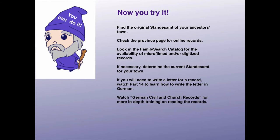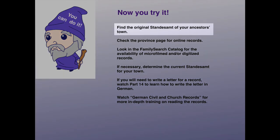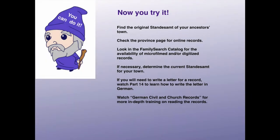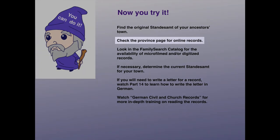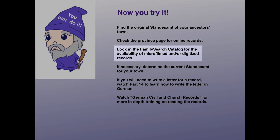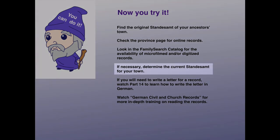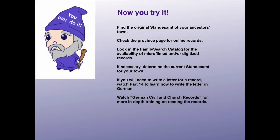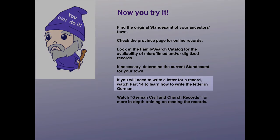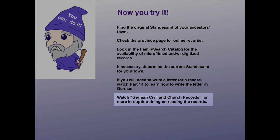Now you try it. Find the original Standesamt of your ancestor's town. Check the province page to see any links for online records. Look in the FamilySearch Catalog for the availability of microfilmed and/or digitized records. If necessary, write letters by determining the current Standesamt for your town, and watch Part 14 of this video series to learn how to write the letter in German. Also watch German Civil and Church Records for more in-depth training on reading the records.